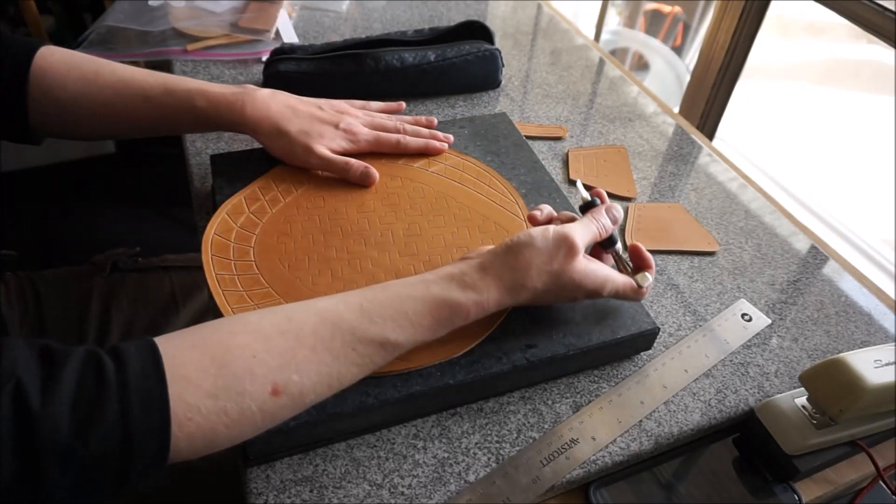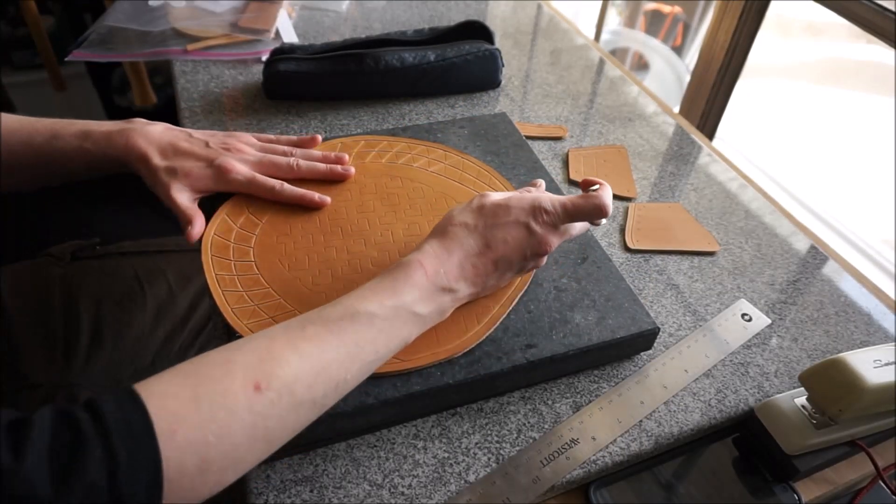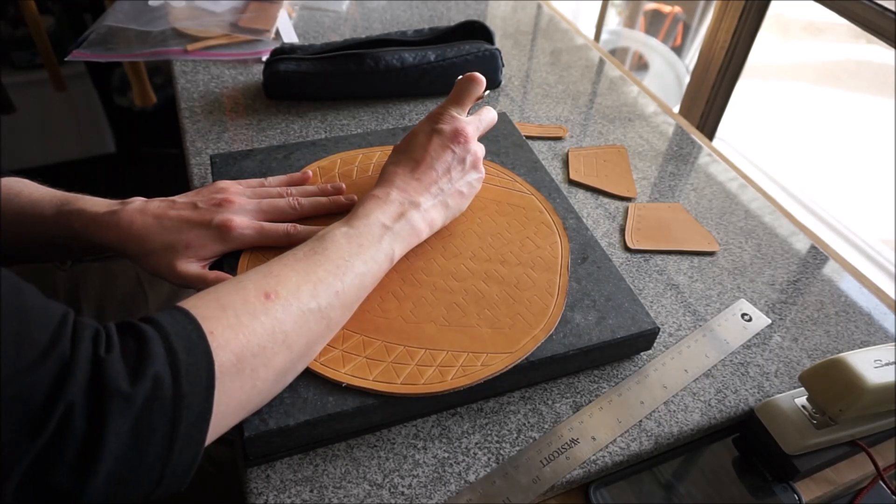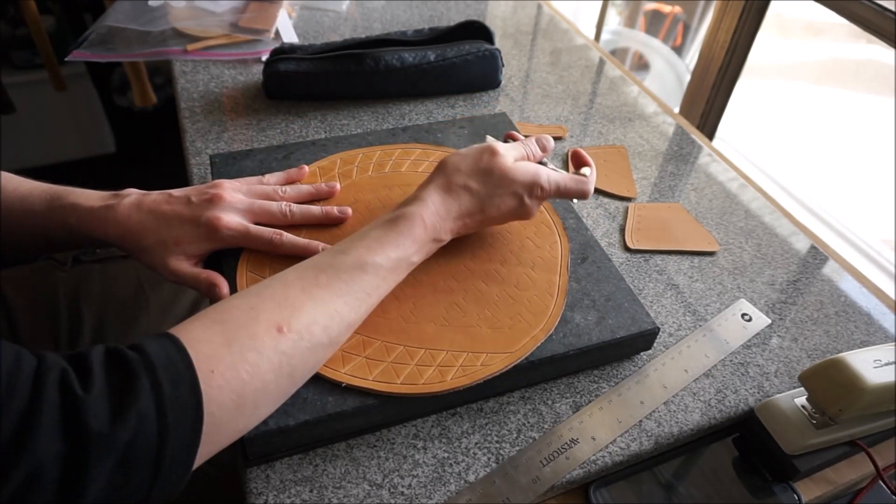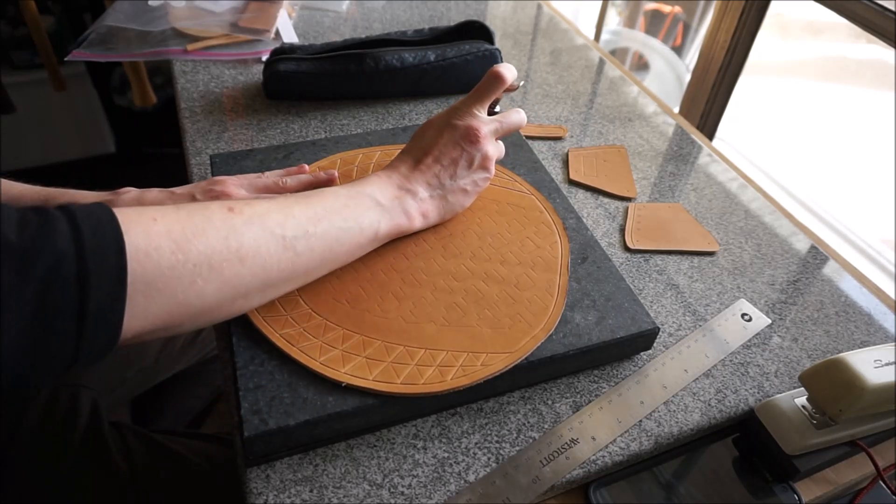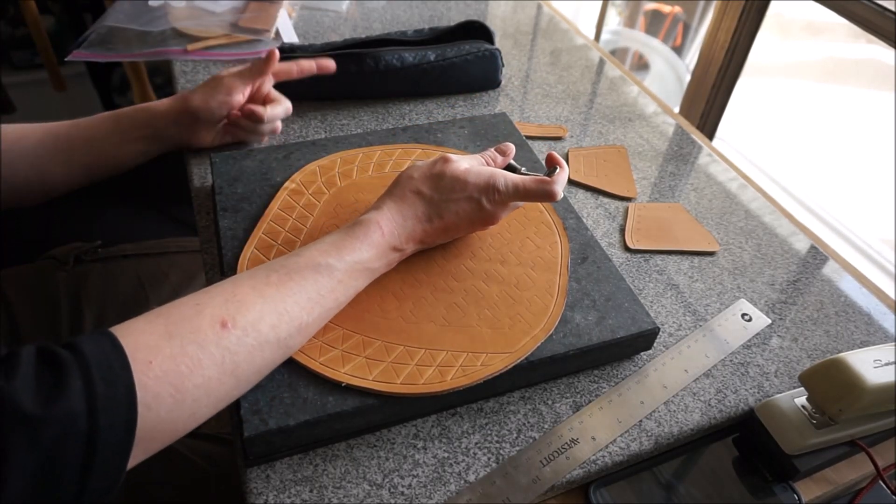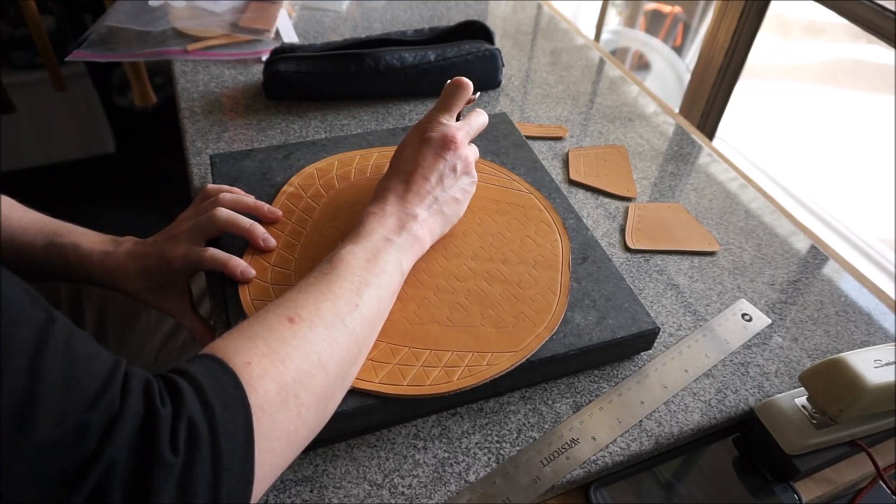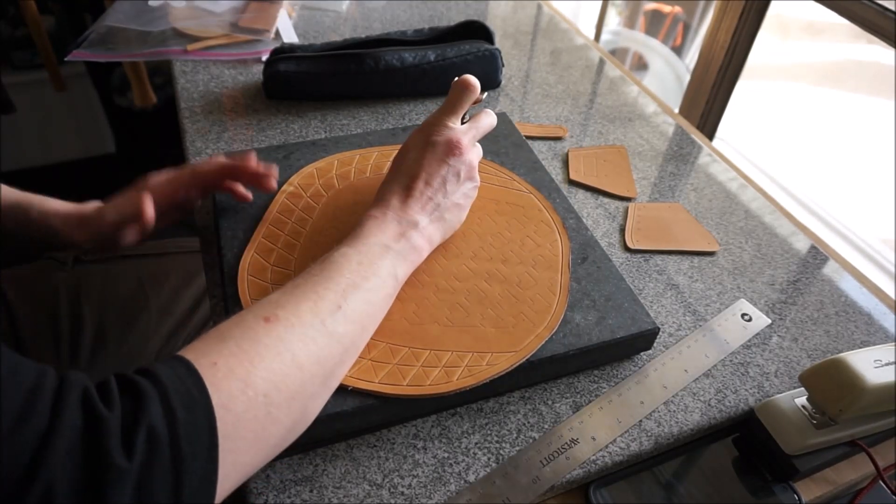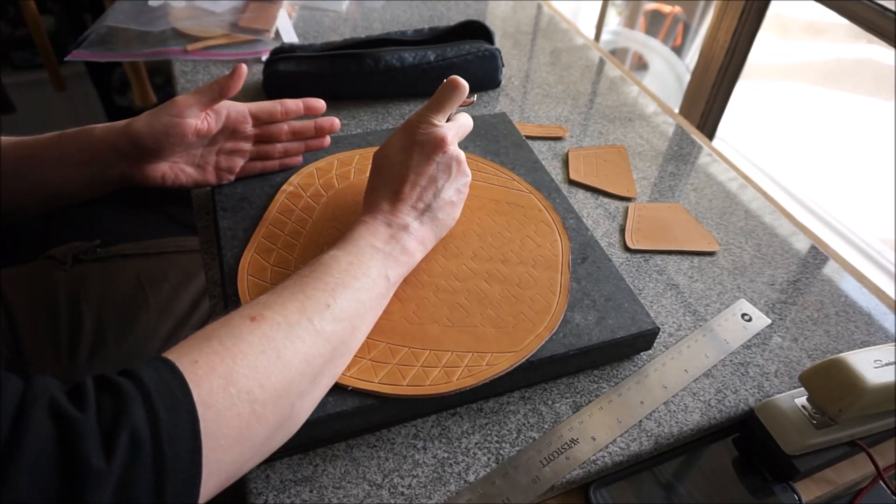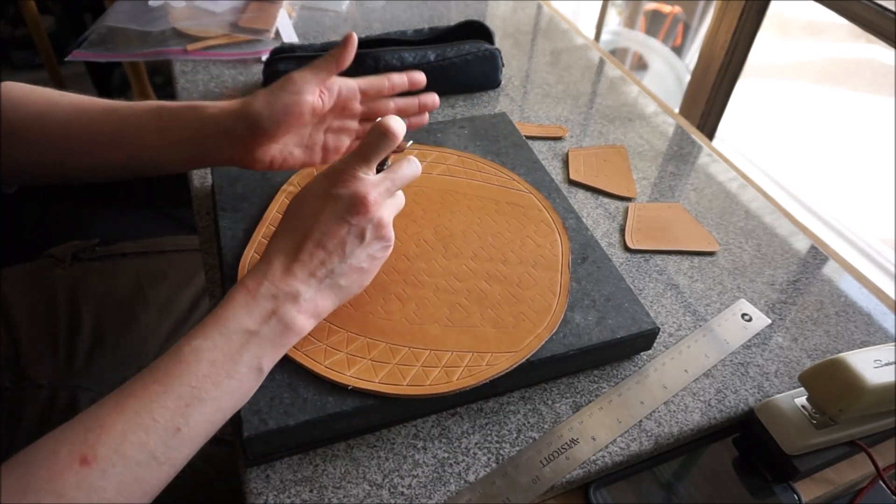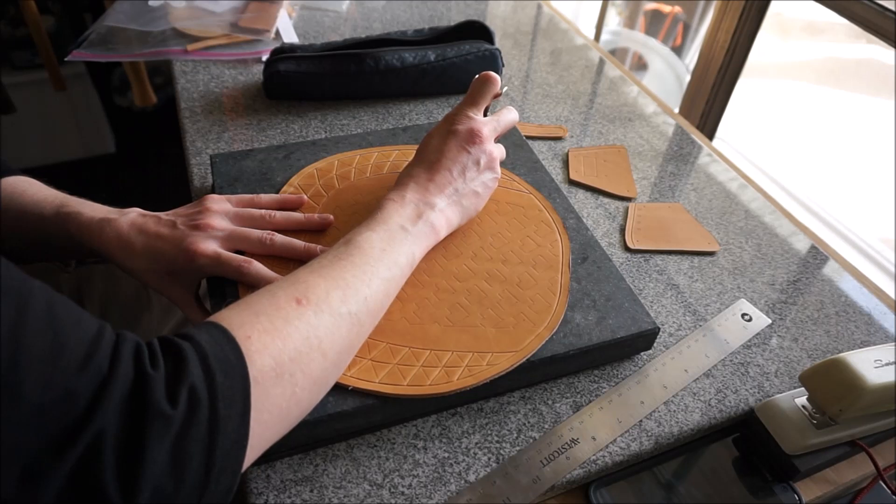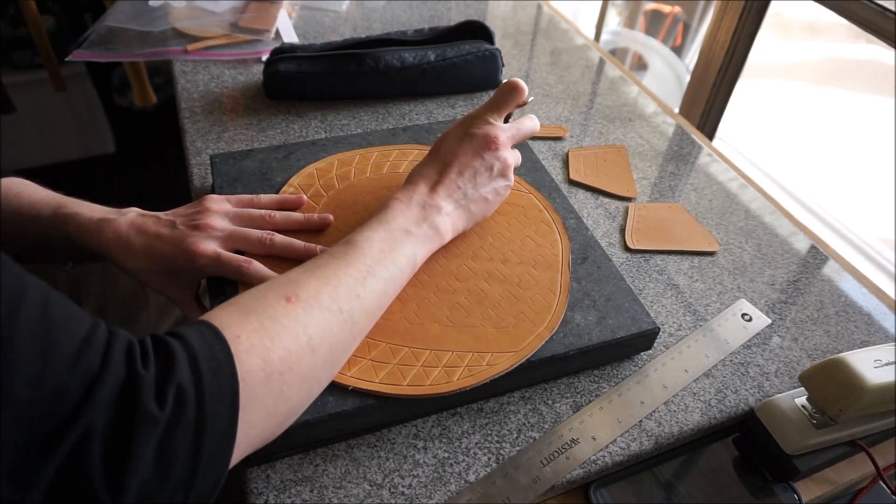One thing worth noting is that you can't make multiple passes. So if say you cut that line and then you're like, Oh shoot, that's not deep enough. I just kind of scraped the surface. I'm going to go back and make it deeper. You know, don't, don't, you can't, you've got to cut it deeply the first time because you're not going to cut it precisely in the exact same location. You're going to end up with two kind of wobbly lines that are close and it just, it isn't going to look right.